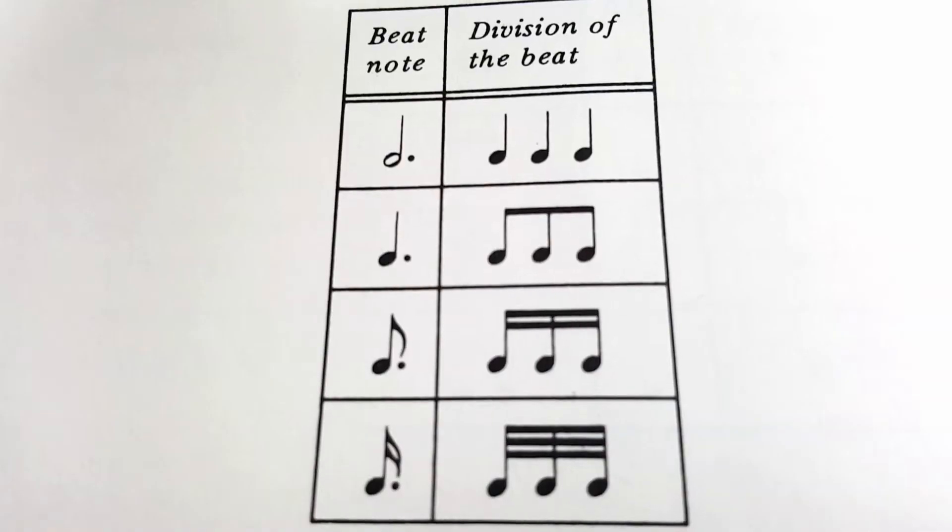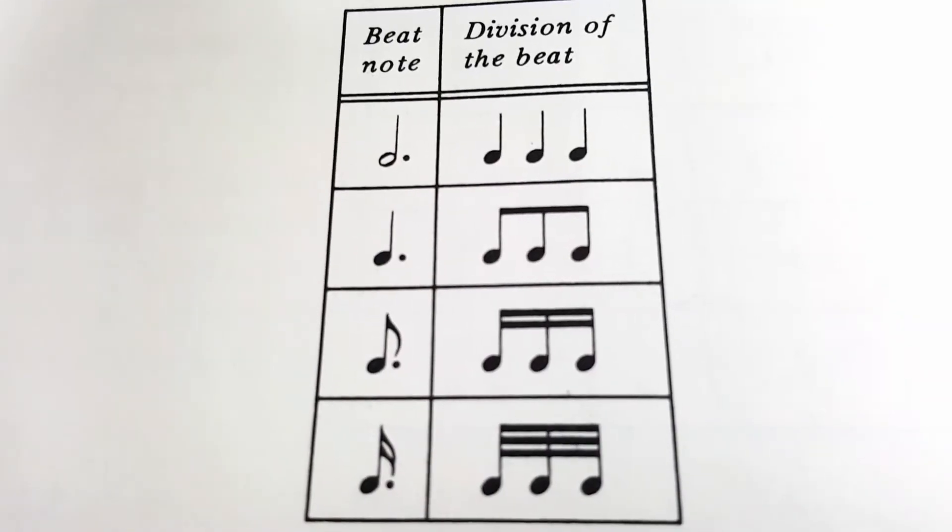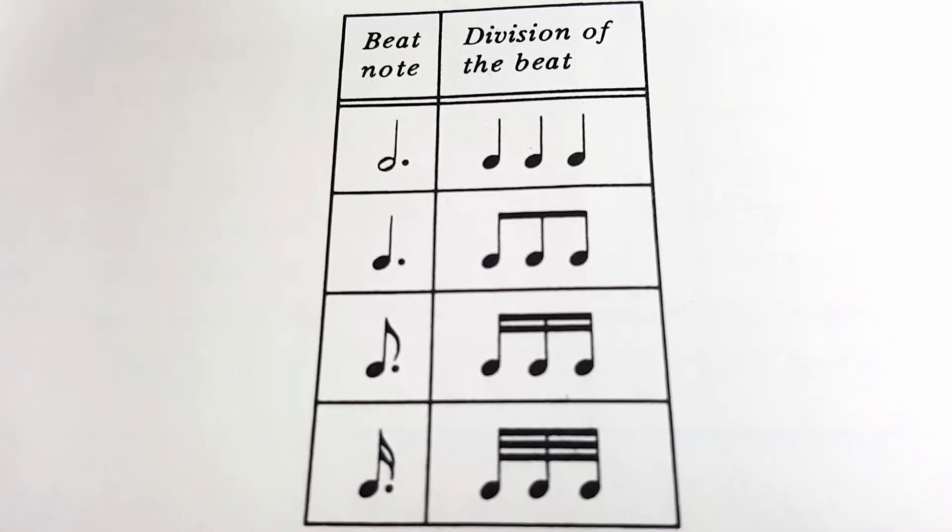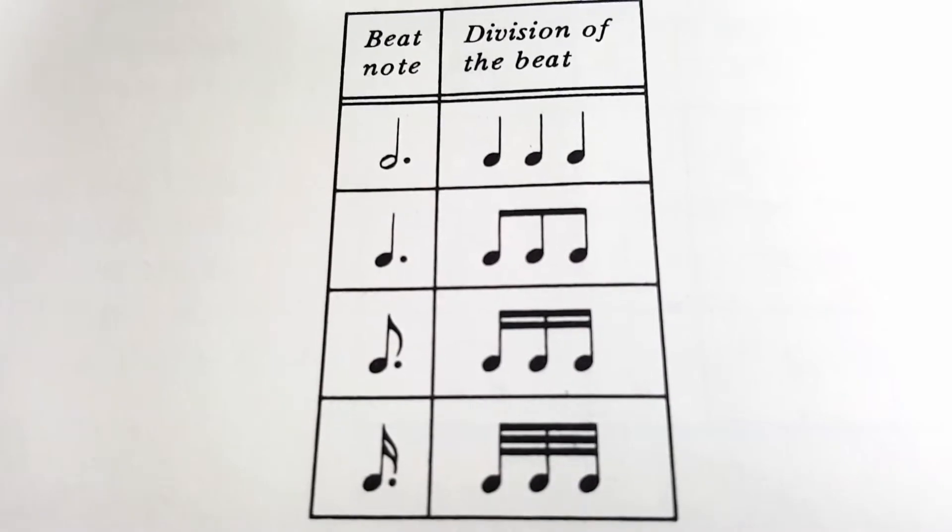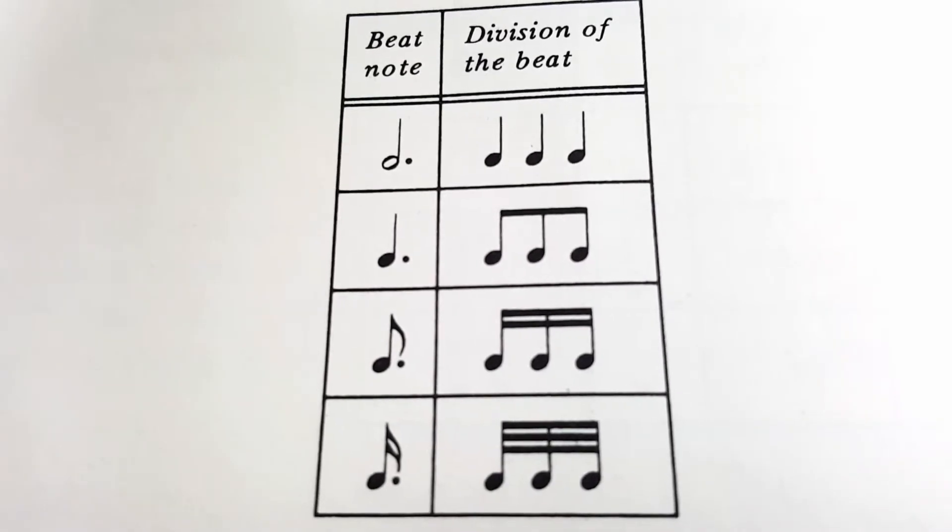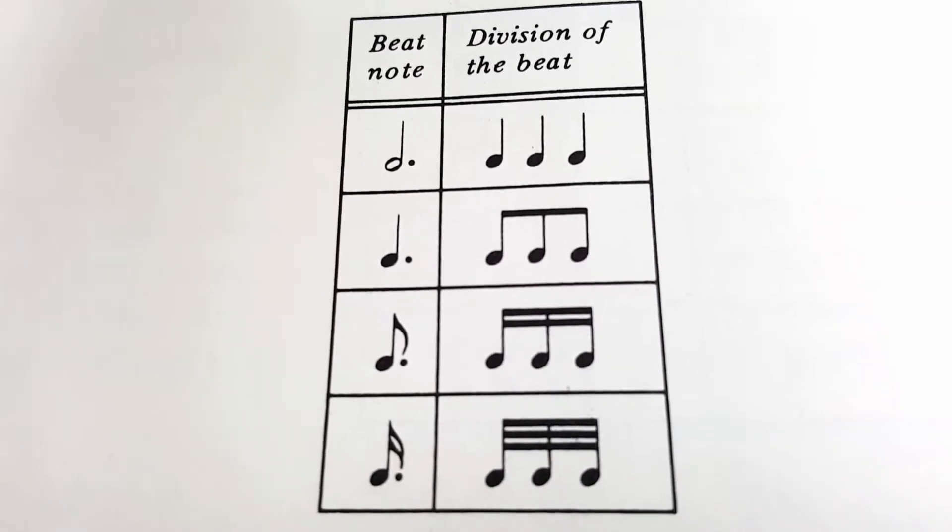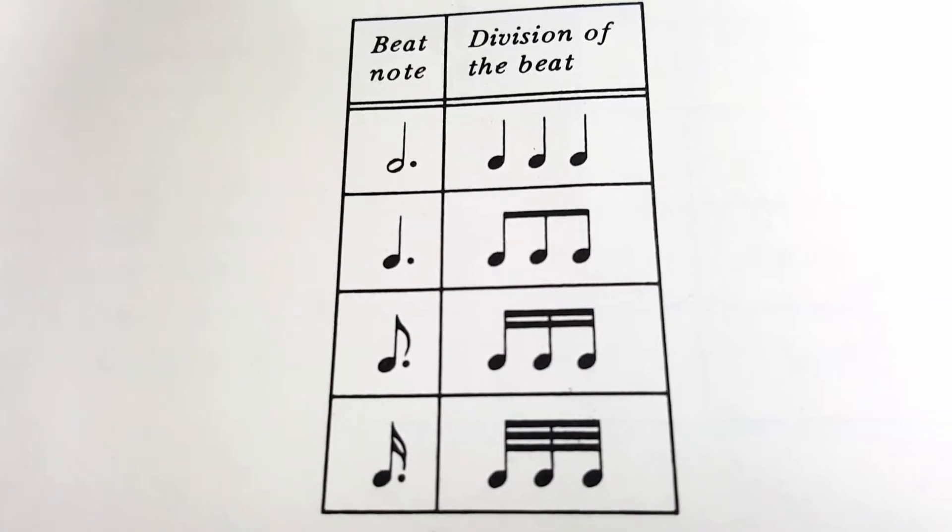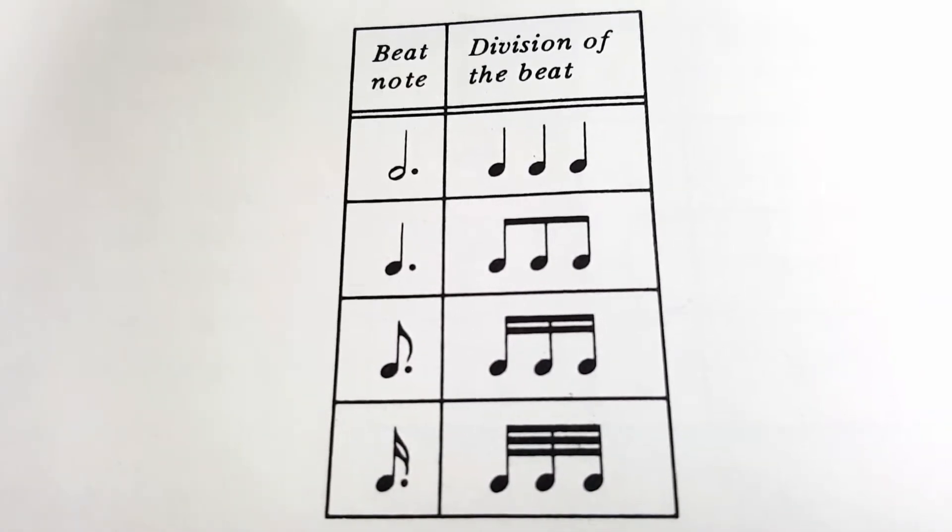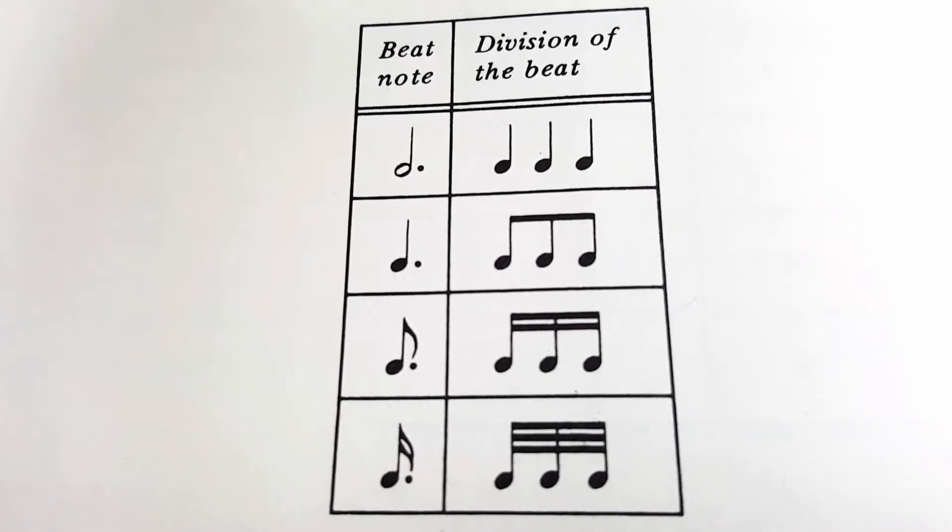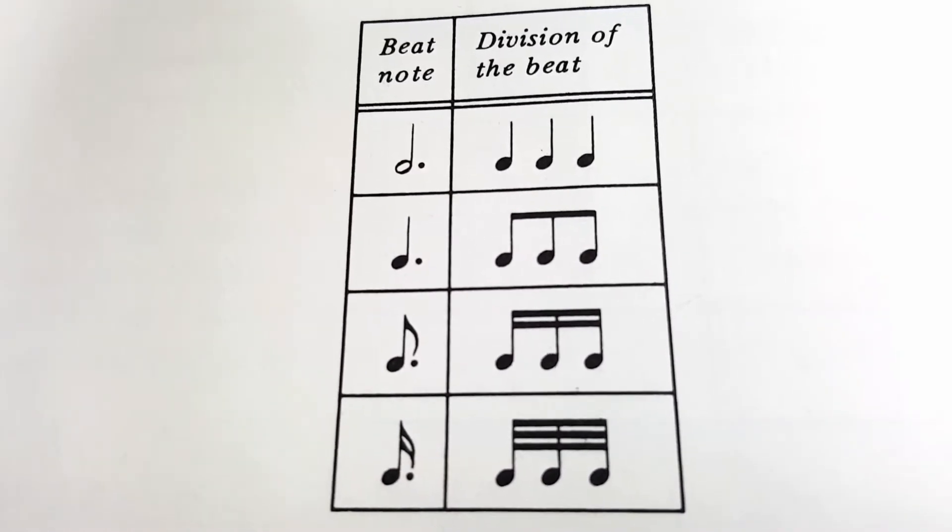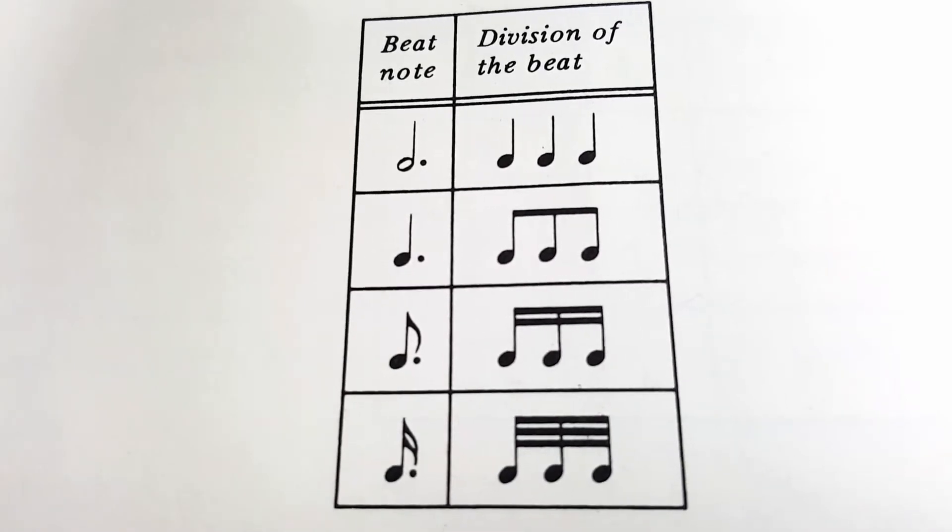It isn't always necessarily a law. So according to Kostka and Payne in Tonal Harmony, which is a music theory textbook for college students, dots do present problems for musicians as they go to various time signatures, especially compound time signatures.